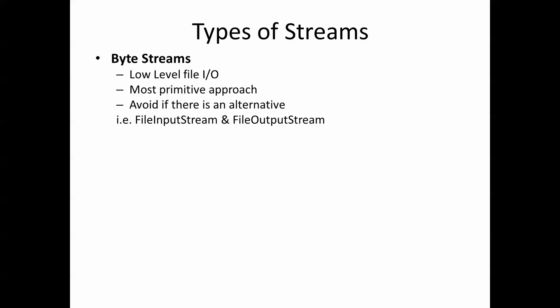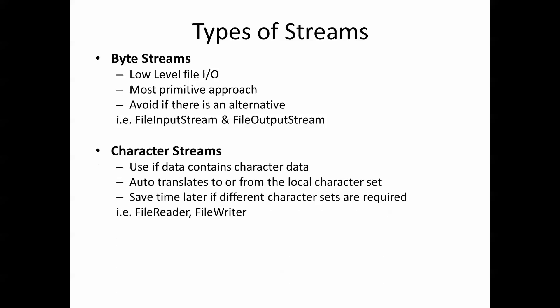There are a number of different types of streams available to us, and each one is designed to carry different types of data. Byte streams are one of the lowest levels of File I/O — they are the most primitive approach and really should be avoided if there is an alternative. Character streams, on the other hand, are good if the data contains character data. They will auto-translate to or from a local character set, saving us time if different character sets are required. Some examples of these are FileReader and FileWriter.